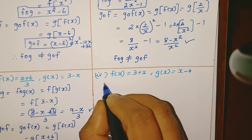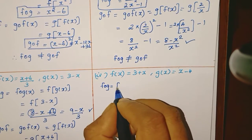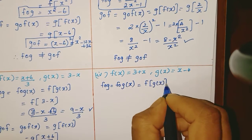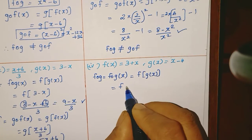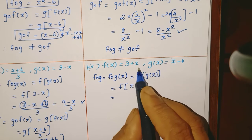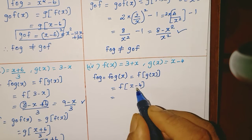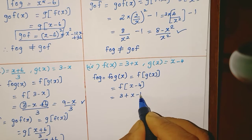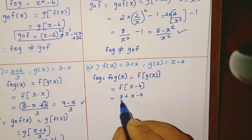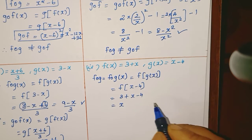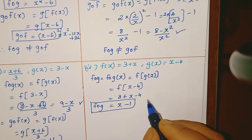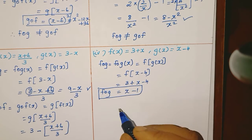Fourth subdivision: f composition g equals f composition g of x, which is f of g of x. Here g(x) = x minus 4. Careful — put x minus 4 inside. x minus 4 becomes the input to f. In f, wherever x appears, we replace it with x minus 4. So f(g(x)) = 3 plus (x minus 4). The constant terms: 3 minus 4 equals minus 1. So f composition g of x = x minus 1.